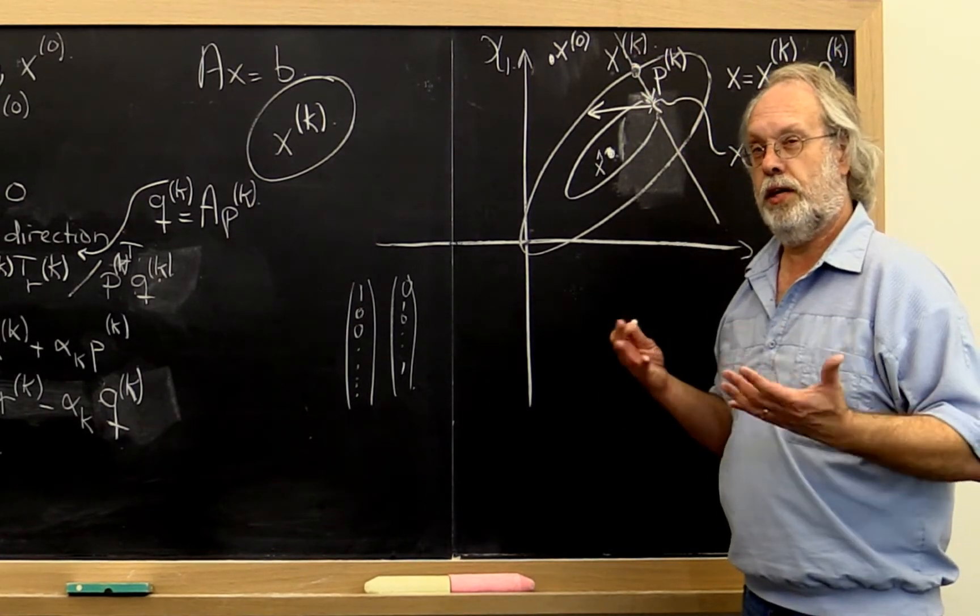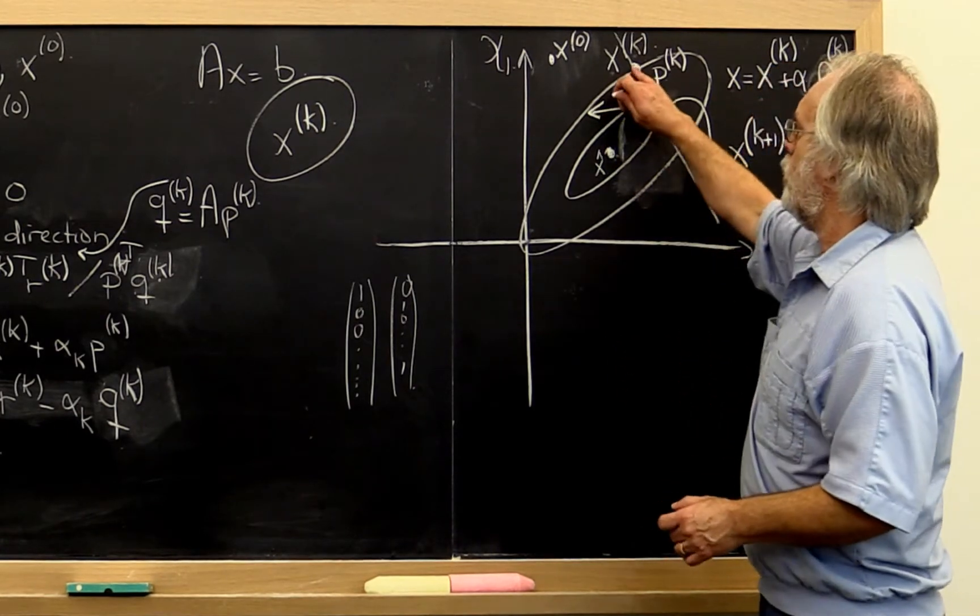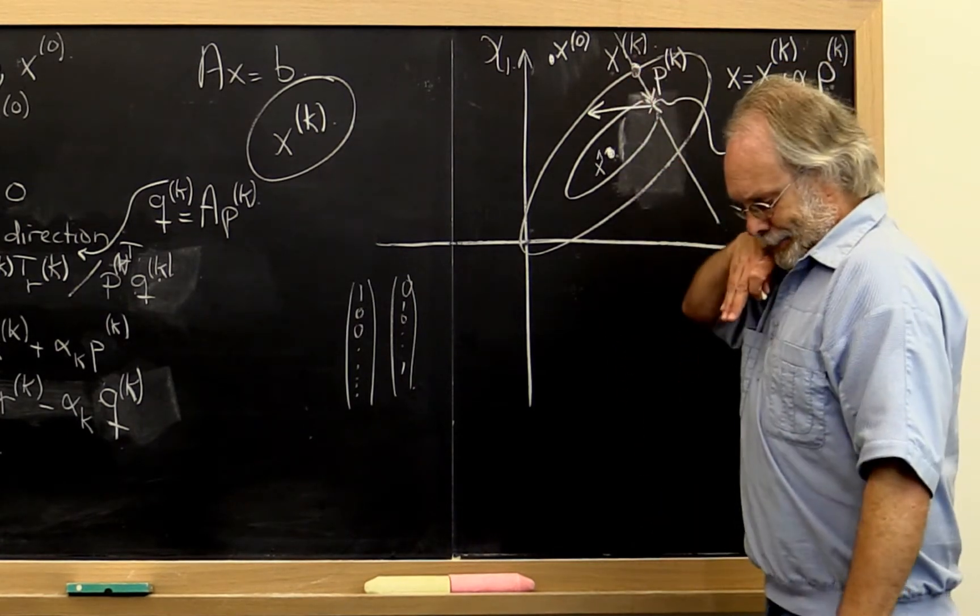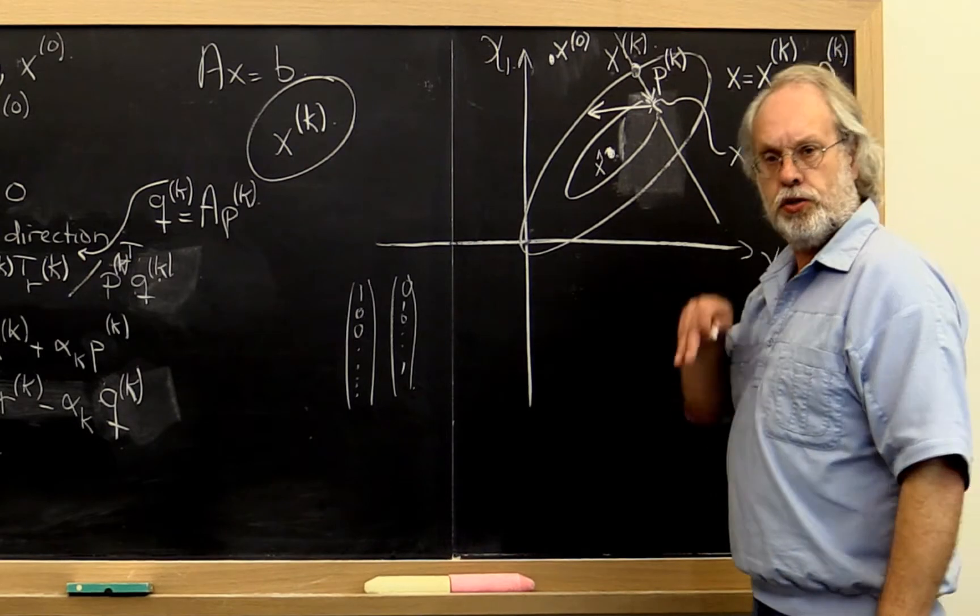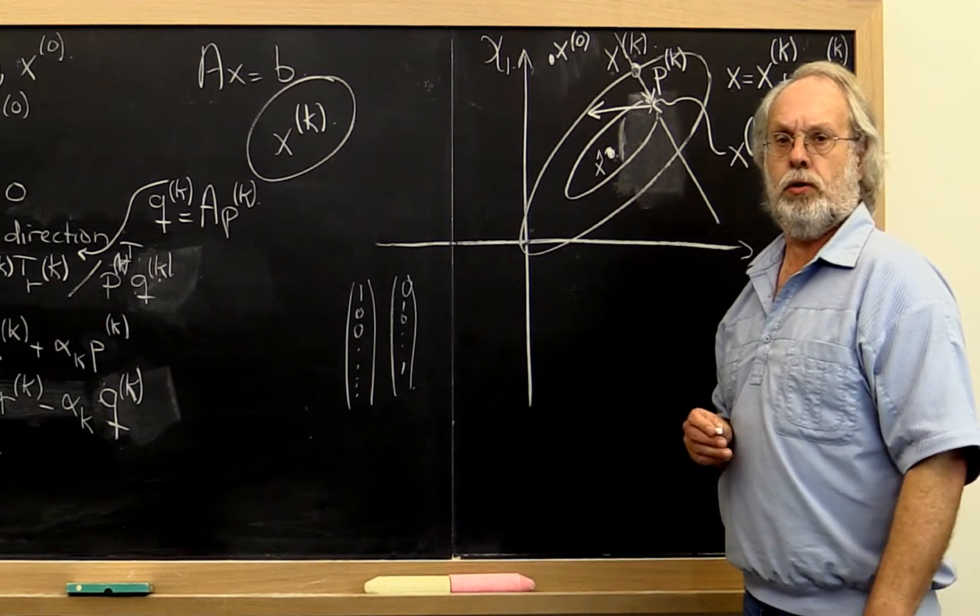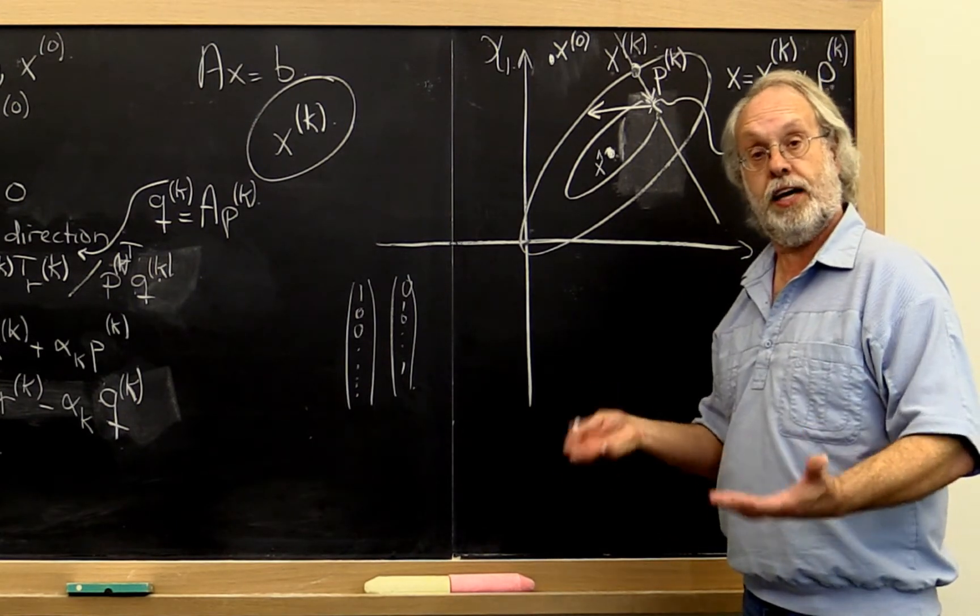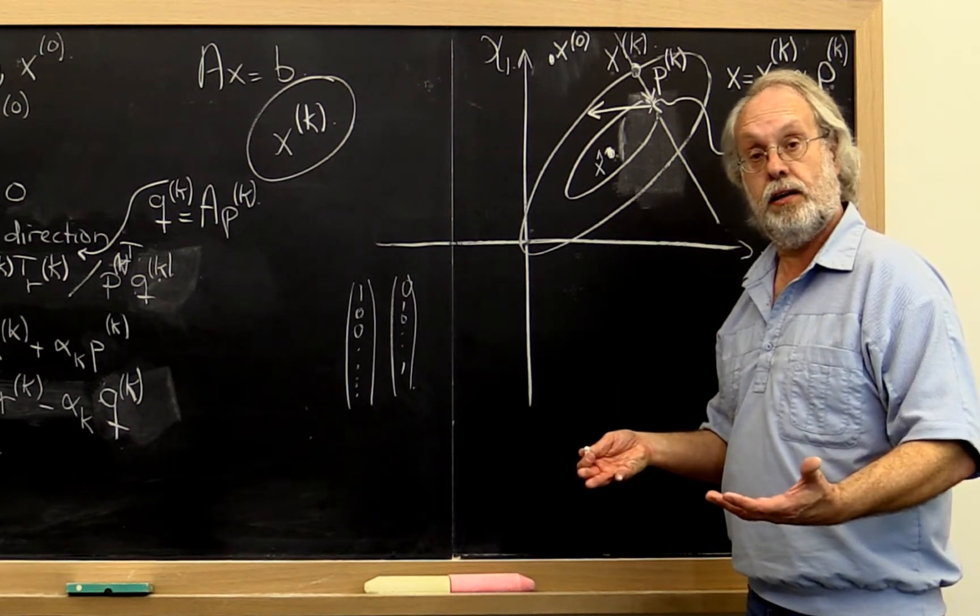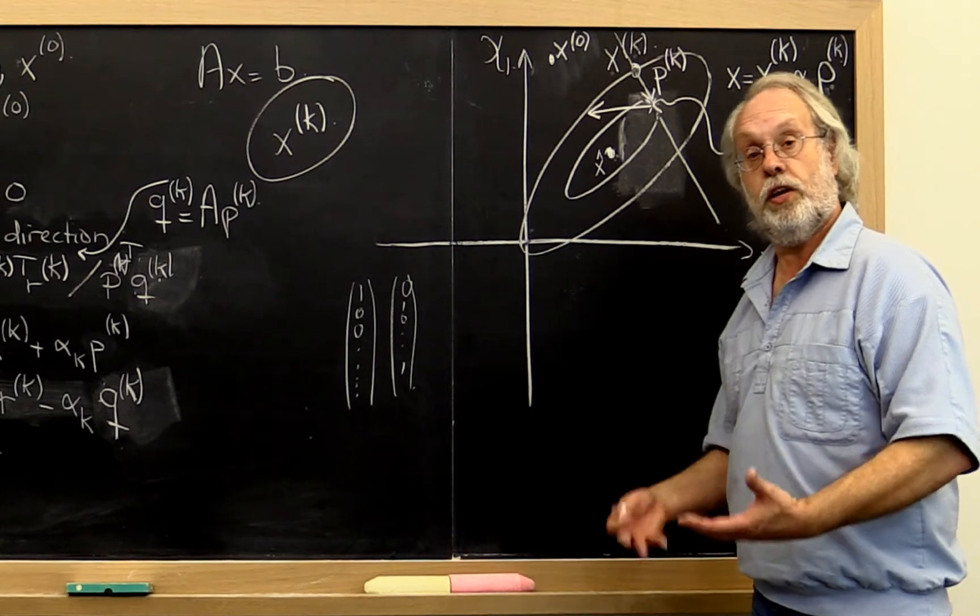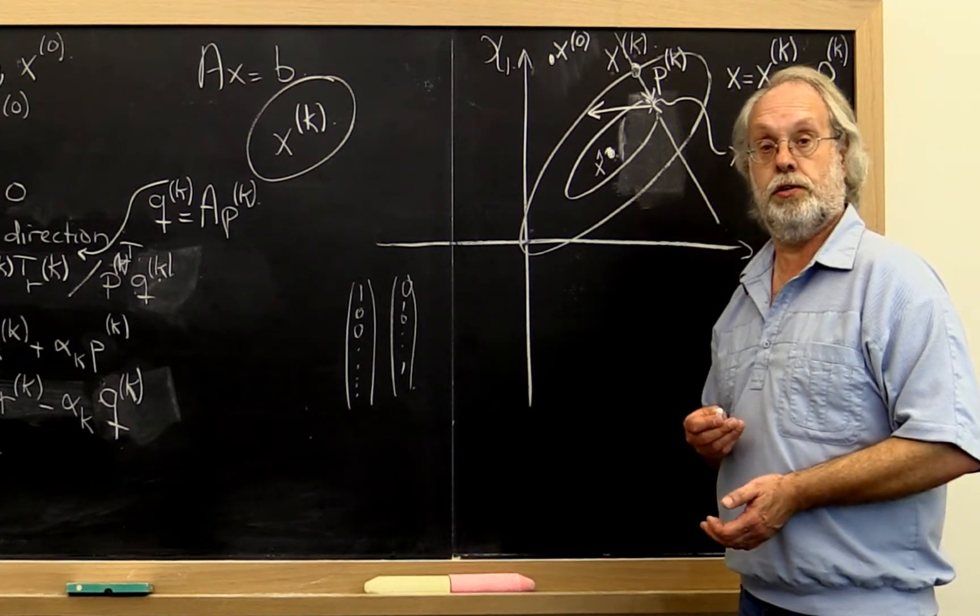Now intuitively you might think to yourself, I would like to go in the direction where I go down the slope the steepest because surely then I will decrease the value of f of x most rapidly. And therefore, surely that must be a really good direction to go into.